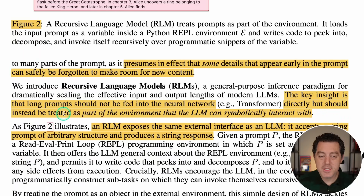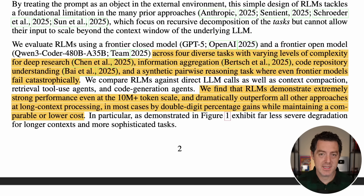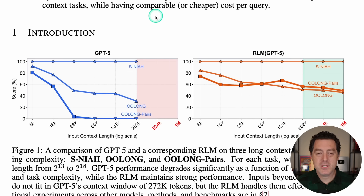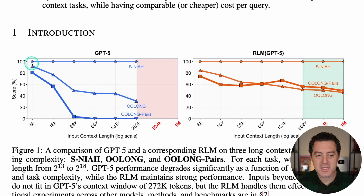Instead, long prompts should be treated as part of the environment that the LLM can symbolically interact with. How did they test this? Needle in the haystack — invented by Greg Cameron — is pretty much solved by all modern models. You fill the context window with text, put something random in the middle like 'password equals 1234,' pass the entire prompt in, and ask what the password is. Frontier models ace this consistently, so needle in the haystack is more or less solved.